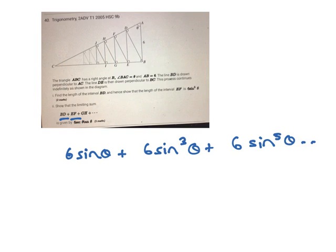So now that means that if we're doing BD, BD is 6 sine theta plus EF, which is 6 sine cubed theta. And following the same pattern, it would be 6 sine to the 5 theta. So it's a geometric series, and the key is C, they said limiting sum.